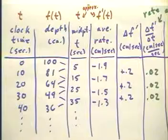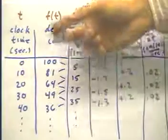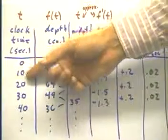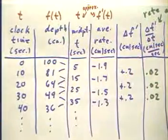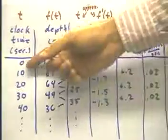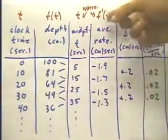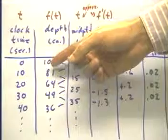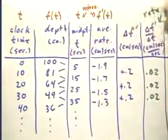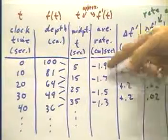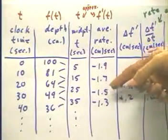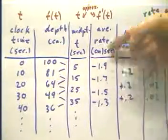And recall that what we do if we want to find the rate of change of the depth is we find our midpoint clock times, which will be 5, 15, 25, 35 seconds, and so forth. And for each midpoint clock time, we find the average rate on the corresponding interval. And these rates are easily found. Between clock time 0 and 10, we have a 10-second time interval where the depth changes by negative 19 centimeters. That gives us a rate of depth change of negative 1.9 centimeters per second. And then we get negative 1.7, negative 1.5, negative 1.3 centimeters per second.